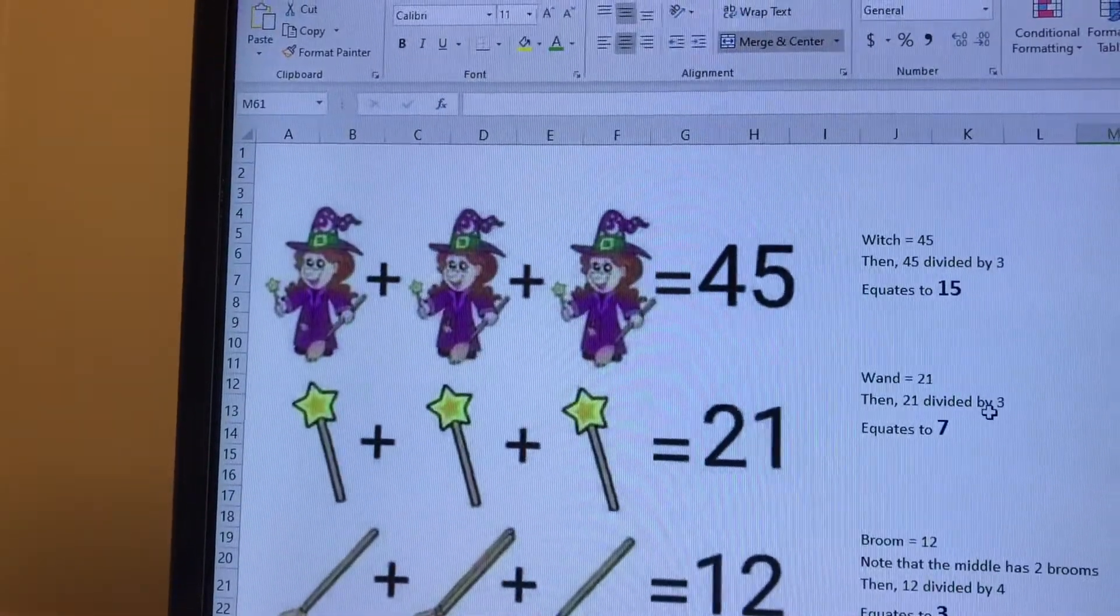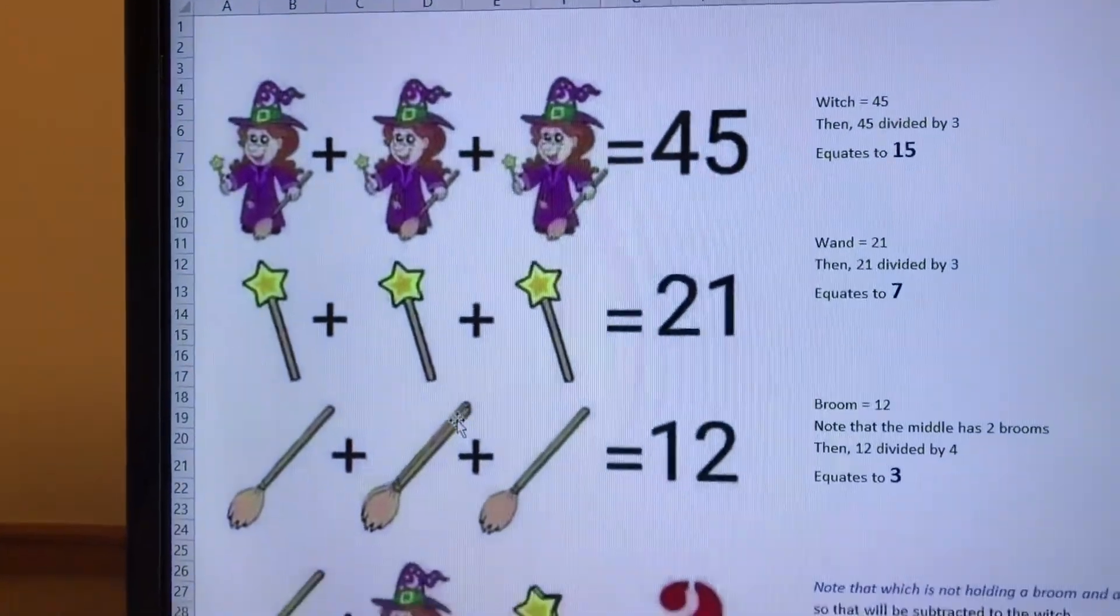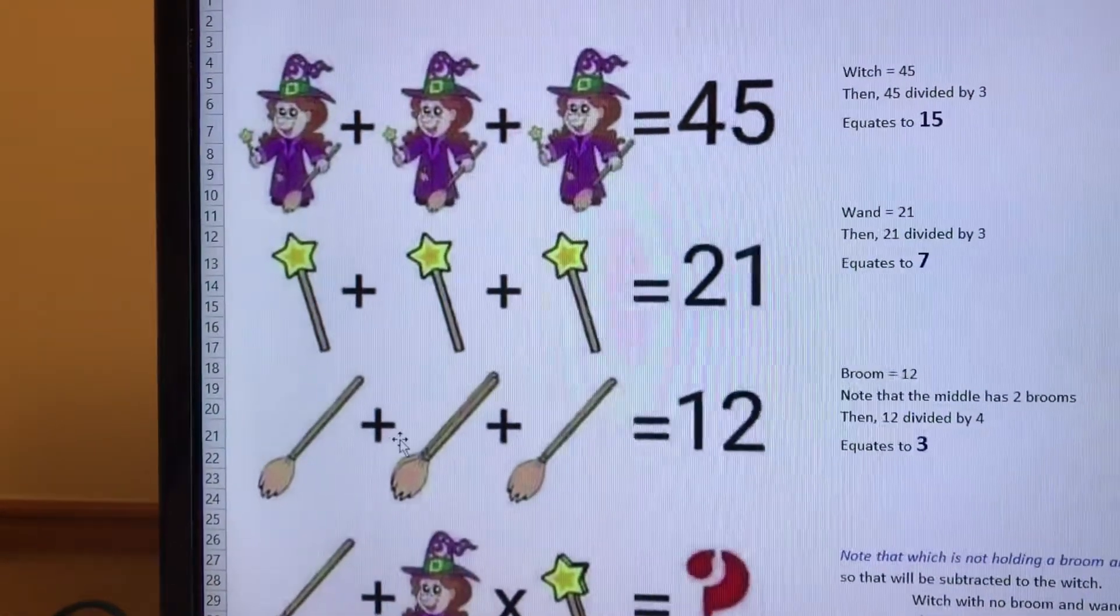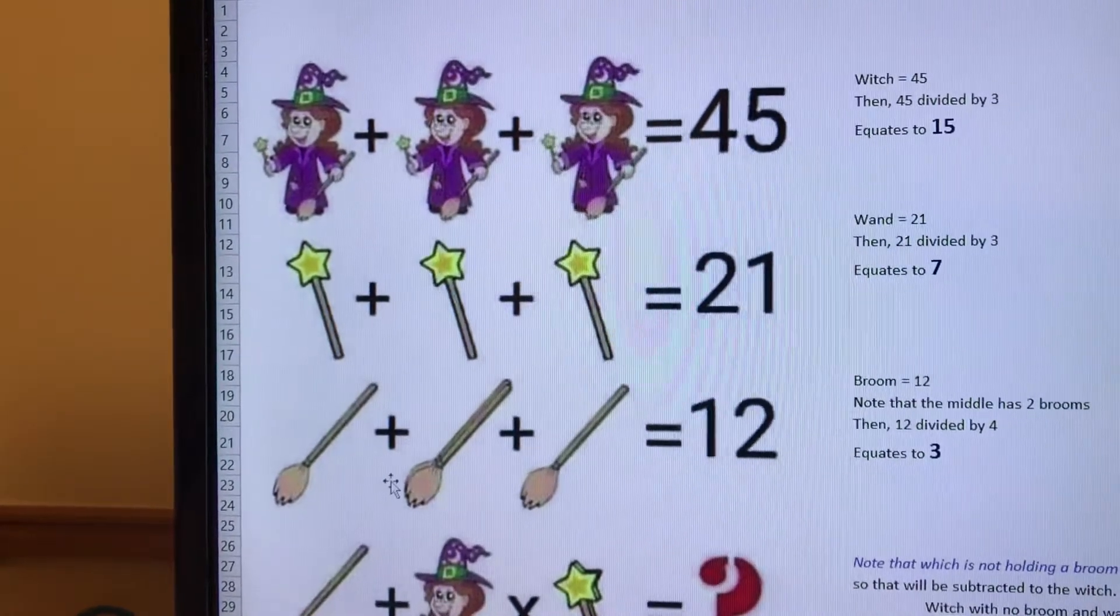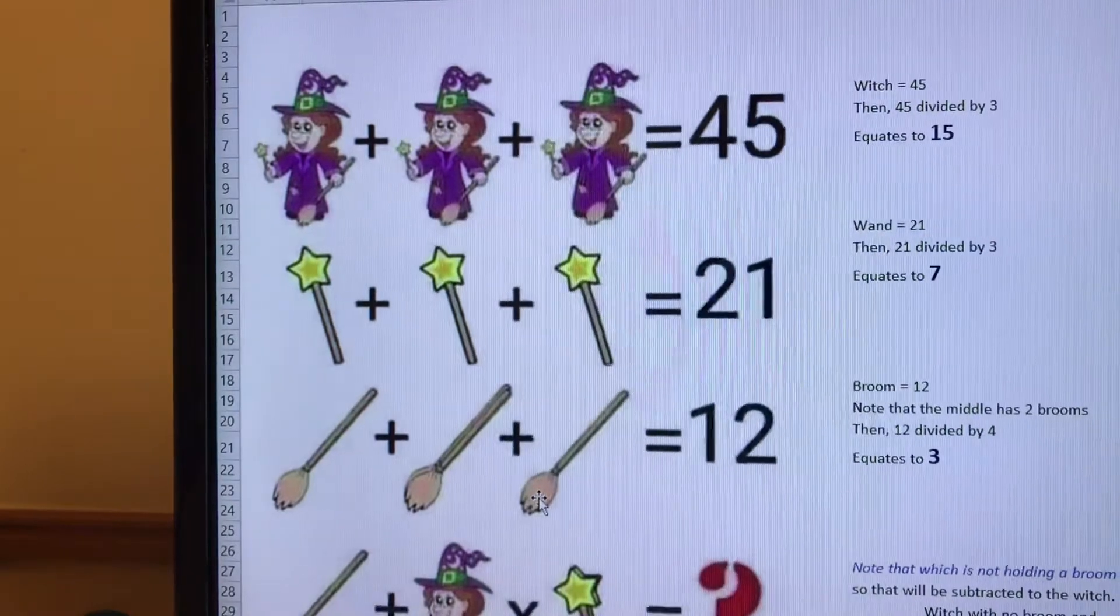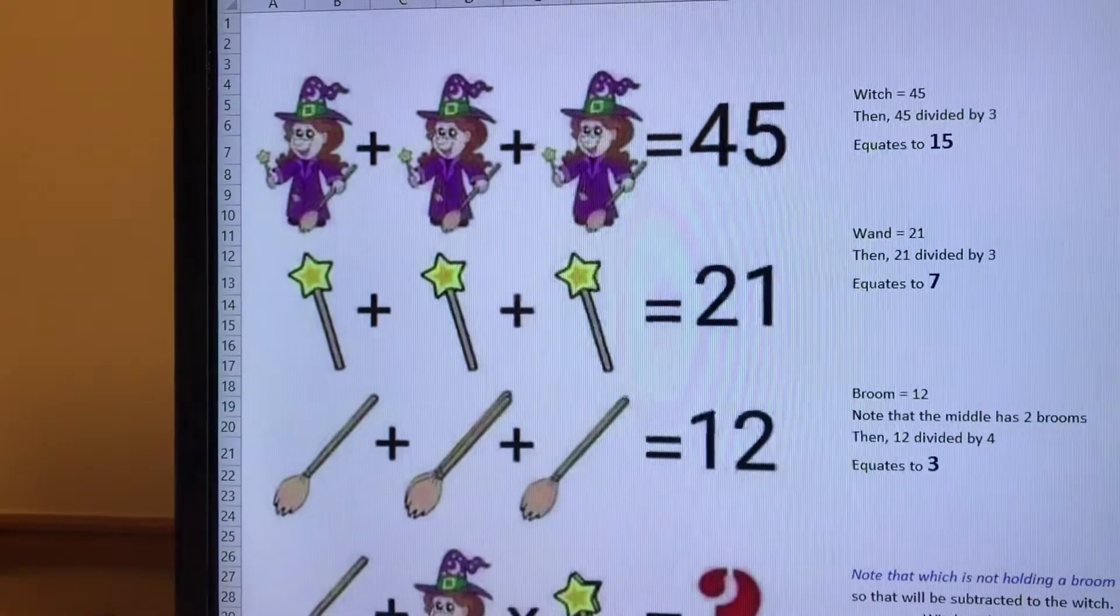The next one is a little tricky because you gotta look at the item. You might think there are three brooms, but in reality if you look at this and zoom in a little bit, there are two back-to-back.